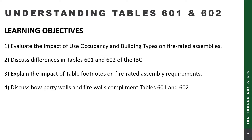With an AIA-approved presentation, it is important to have learning objectives. With this presentation on Understanding Table 601 and 602 of the IBC, the critical considerations are: first, to evaluate the impact of use occupancy and building types on fire rated assemblies; discuss differences in Table 601 and 602 of the IBC; look at the footnotes and how they impact fire rated assembly requirements in both Table 601 and 602; and look at party walls and firewalls as they complement Table 601 and 602.